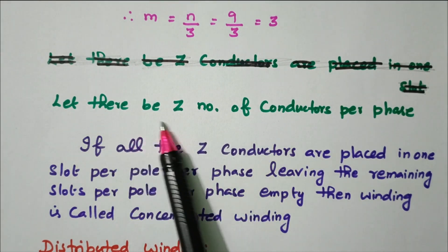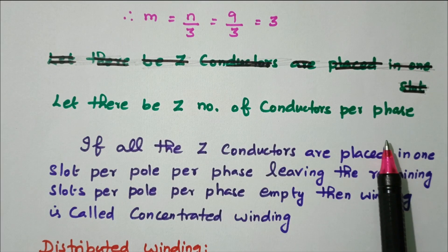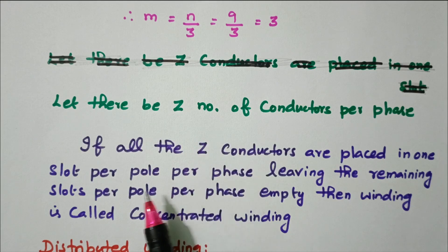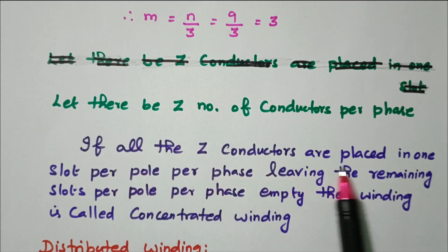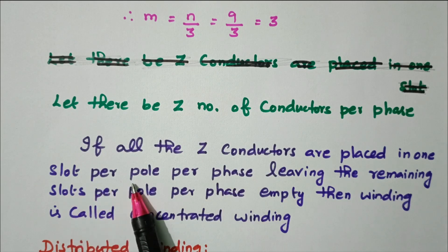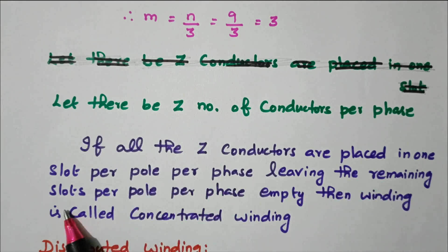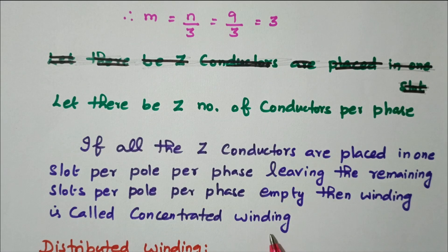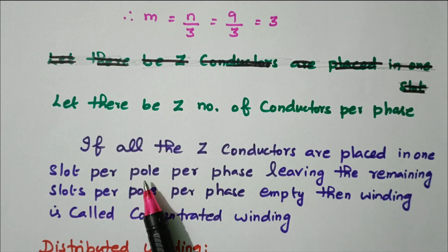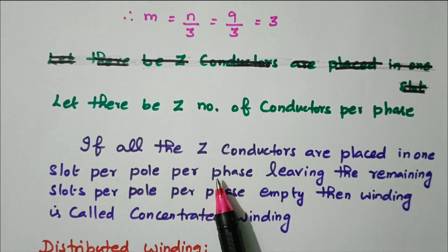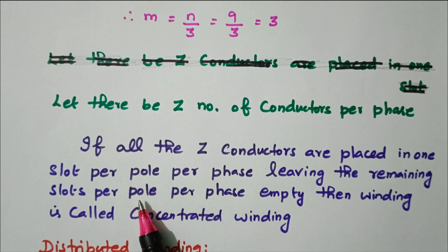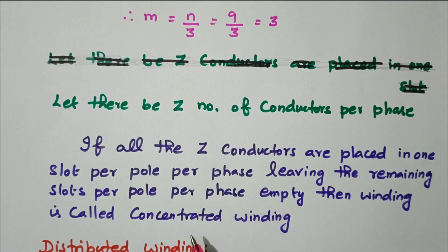Let there be z number of conductors per phase. If all the z conductors are placed in one slot per pole per phase, leaving the remaining slots per pole per phase empty, then the winding is called concentrated winding. The name itself — concentrated — means all windings are placed in one slot; the other remaining slots are kept empty.